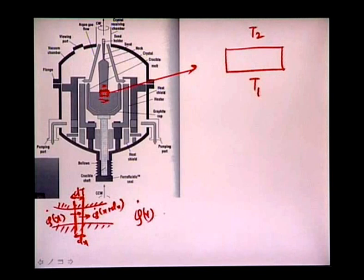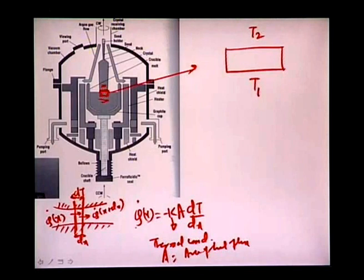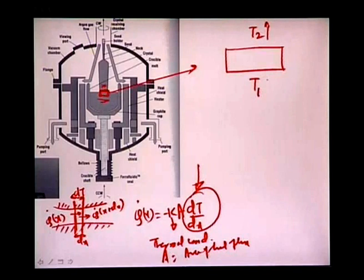Here k is the thermal conductivity of the material, A is the area of heat flux perpendicular to the cross-sectional plane, and dT/dx is the temperature gradient. The presence of a temperature gradient necessarily implies a heat flow.